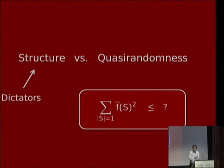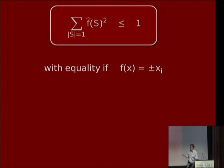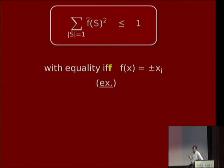Let's analyze this quantity — the sum of squares of degree-one Fourier coefficients — in light of the distinction between dictators and quasi-random functions. How can we upper-bound this? The sum of squares of all Fourier coefficients is at most one, so certainly this is at most one. Equality is achieved if f is a dictator or negation of a dictator, since a dictator has just one nonzero Fourier coefficient of value plus or minus one at degree one. In fact, this is an if-and-only-if condition.